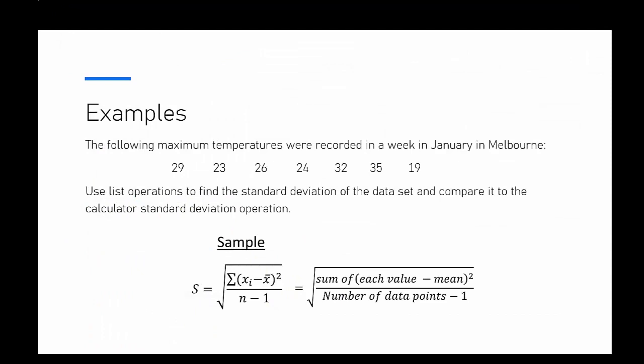Now we've entered the data points, I want to look at the calculation we're actually going to be doing. With our standard deviation formula - in case it doesn't make a huge amount of sense - I've also written out what each of those symbols means in words. We're going to take each value, minus the mean of those seven data points from that value, then square each of those. We'll end up with seven squared values, add all of those together, divide by the number of data points minus one - so seven minus one is six - and then take the square root, which gives us our standard deviation.